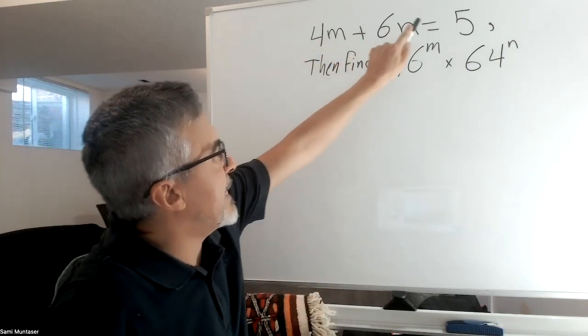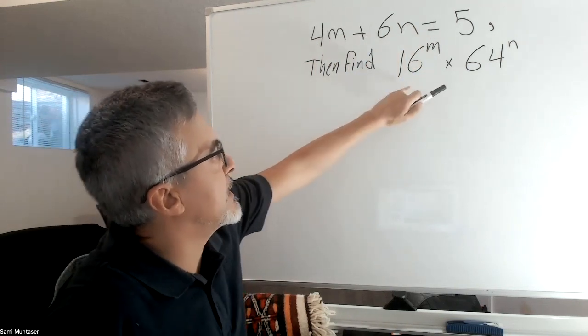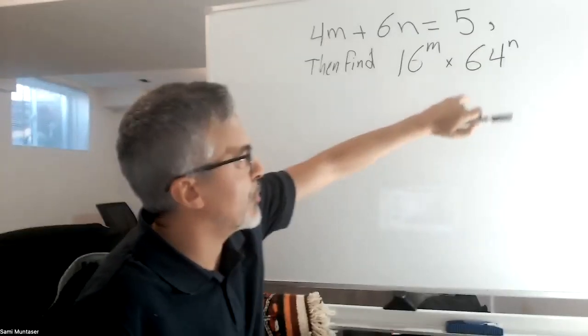So here's a question: If 4m plus 6n equals 5, then find 16 to the power of m times 64 to the power of n.